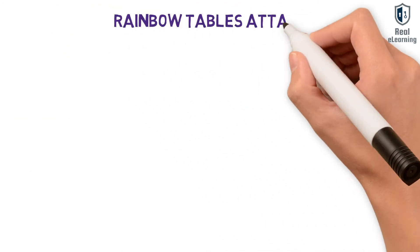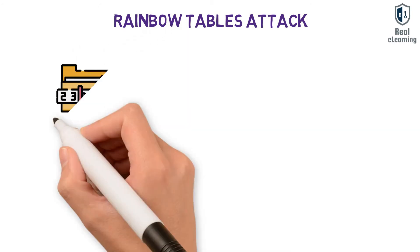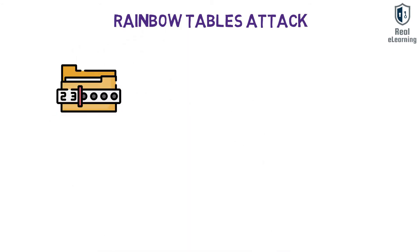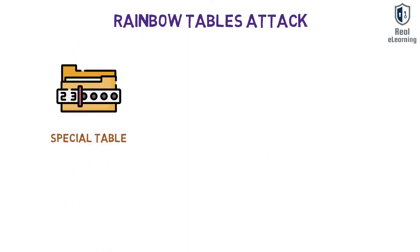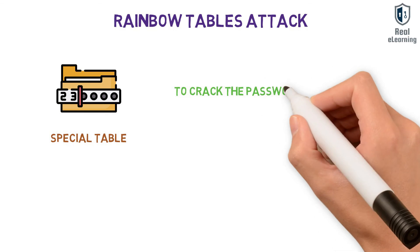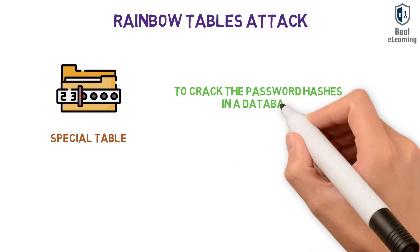Rainbow table attack is a password cracking method that uses a special table — a rainbow table — to crack the password hashes in a database.